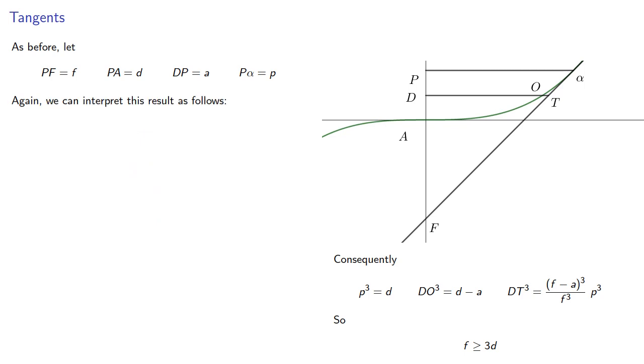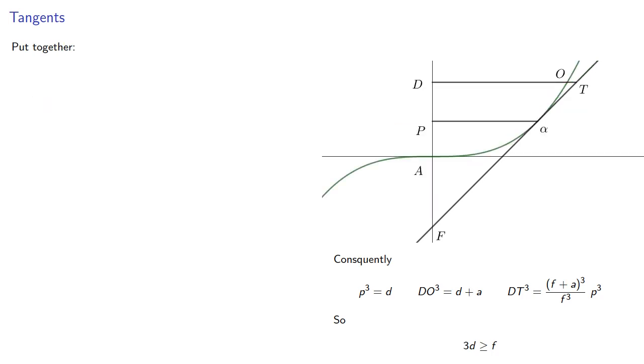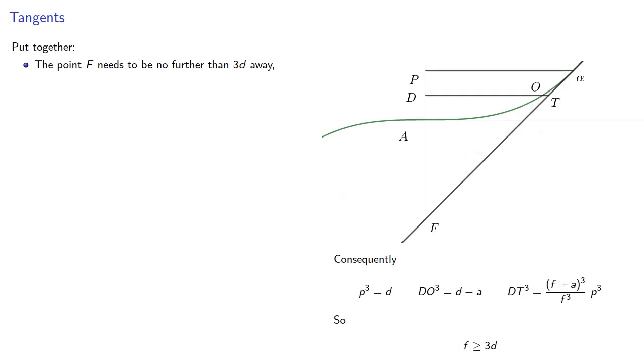And as before, we can interpret this result as follows. Provided the intersection point is at least 3D away, the line through the alpha will be beyond the curve for all points up to alpha. Put together, the point F needs to be no further than 3D away, so that we don't intersect beyond alpha. But it also needs to be at least 3D away, so we don't intersect before alpha. And so that means our point F should be exactly 3D away from P in order for the line F alpha to be tangent to the curve.